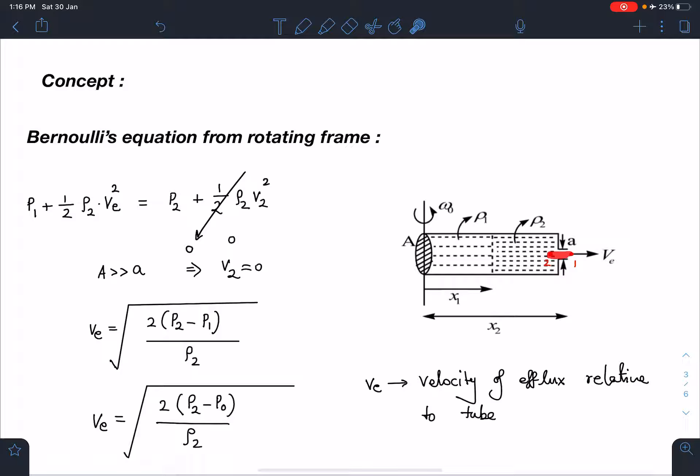If this term is 0 I can write this velocity of efflux as 2 times p2 minus p1, which is the pressure difference between just inside and just outside. See we cannot apply Bernoulli's between first and last point. We need to apply Bernoulli's between any two points within the same liquid. So, this is going to be 2 p2 minus p0 divided by rho of coming out.